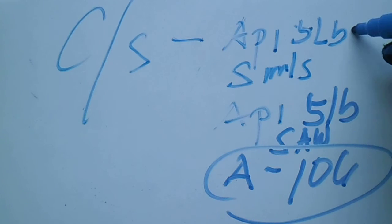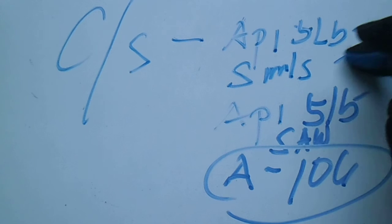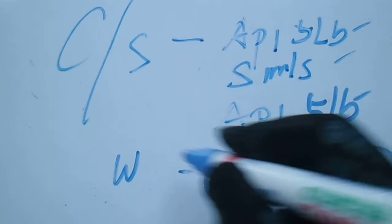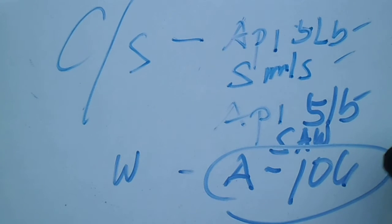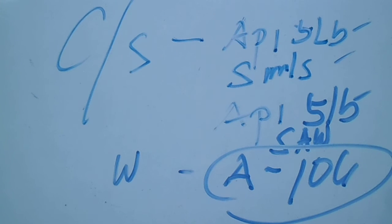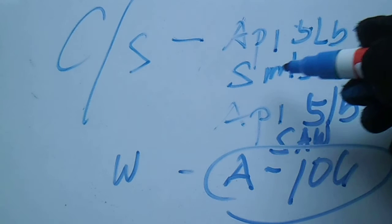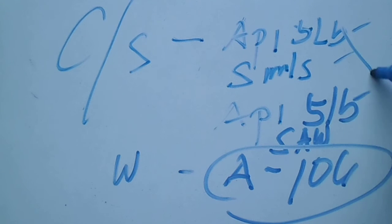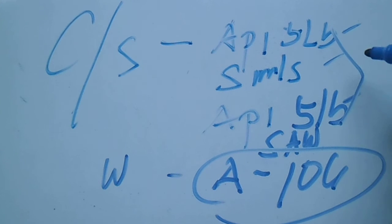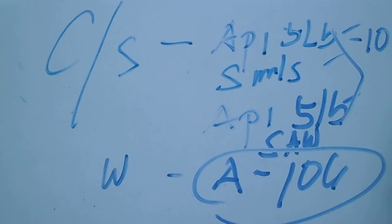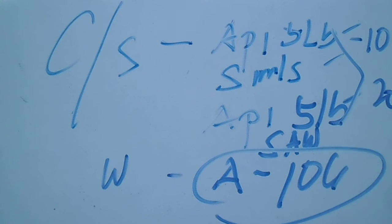For the API 5L Grade B (both seamless and SAW), the color coding is no color. For A106, the color is white. These pipes also have different schedule thicknesses — API 5L has schedule 10 and schedule 20.